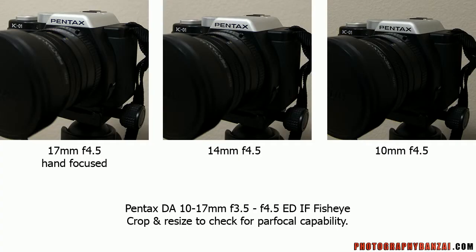Here is the 10 to 17 millimeter lens. I have all of the apertures fixed to f4.5 in this case. I used 17 millimeter to hand focus on the Pentax text in the photo you can see. When we go down the line, all I did was change the zoom — 14 millimeter and 10 millimeter. It's pretty difficult to see any changes because it's such a wide-angle lens.